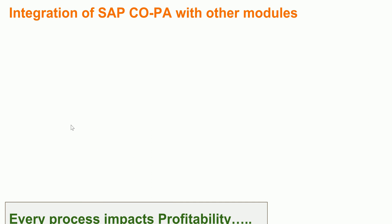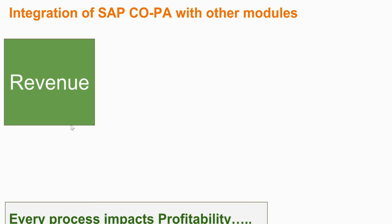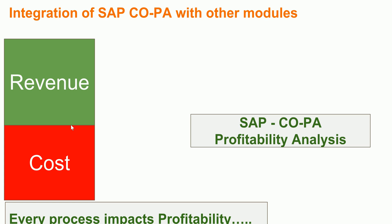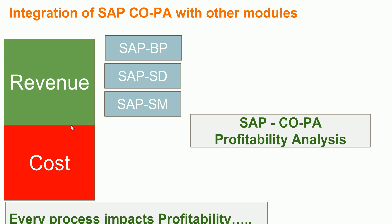On the revenue side you have customer modules which are business partners — in SAP S/4HANA you use business partners — along with the SAP SD module and the SAP SM service management module. Sometimes when you sell a product you may also sell a service. For example, when Apple sells an iPad or iPhone it also sells AppleCare, which is a service covering product replacement in case of damage. All such services are managed in the SAP Service Management module SM.